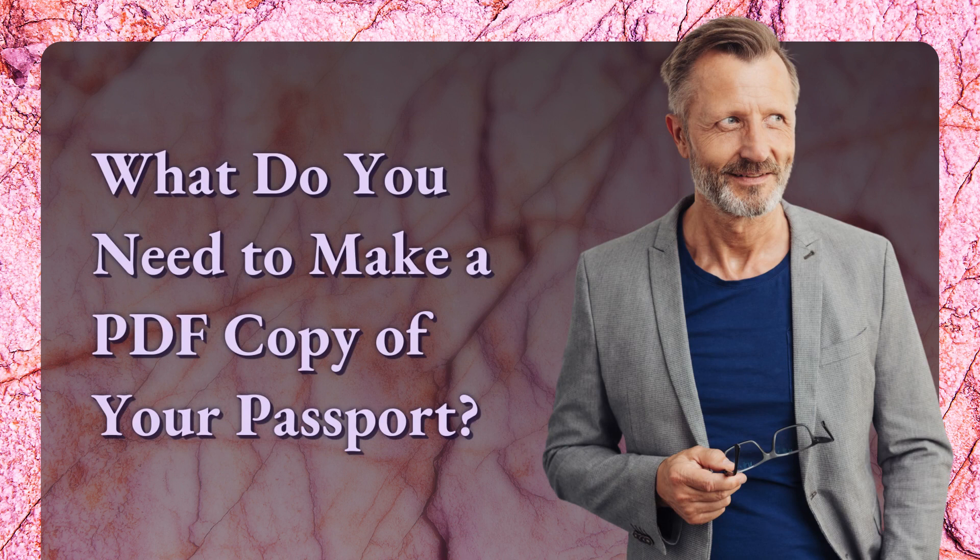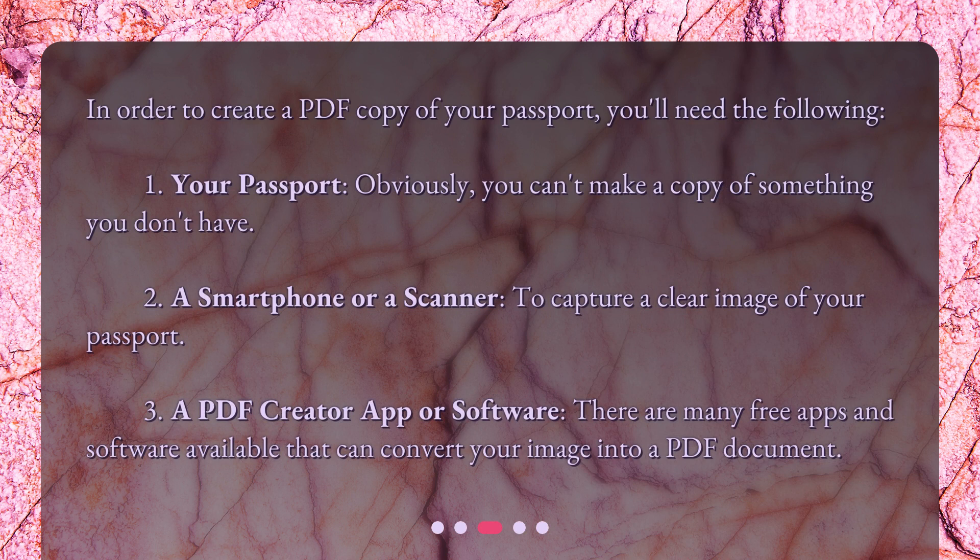What do you need to make a PDF copy of your passport? In order to create a PDF copy of your passport, you'll need the following: 1. Your passport — obviously, you can't make a copy of something you don't have. 2. A smartphone or a scanner to capture a clear image of your passport. 3. A PDF creator app or software. There are many free apps and software available that can convert your image into a PDF document.